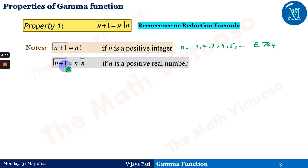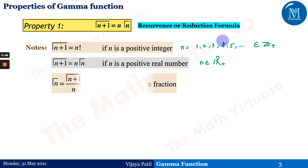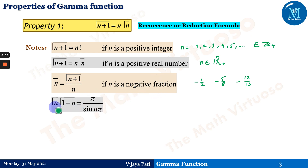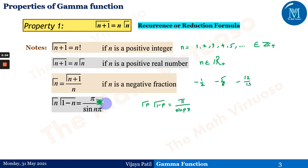The second note says gamma of n plus 1 equals n times gamma of n when n is a positive real number. For negative fractions, the formula becomes gamma of n equals gamma of n plus 1 divided by n. Additionally, gamma of n times gamma of 1 minus n equals pi divided by sine of n times pi. Some books write this as gamma of p times gamma of 1 minus p equals pi over sine of p pi, where p lies between 0 and 1.